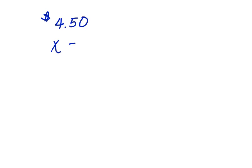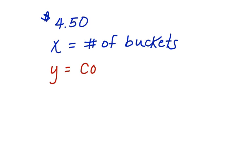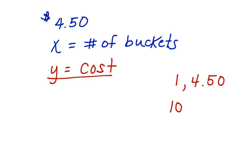First, let's write down what we know. We know that it's $4.50 for popcorn, and that the buckets are unlimited. So, if X were to represent the number of buckets a person could eat, then Y would represent the cost. So, what doesn't change? The cost doesn't change. So, if a person eats one bucket of popcorn, it's $4.50. But if a person eats 10 buckets of popcorn, it's still $4.50.